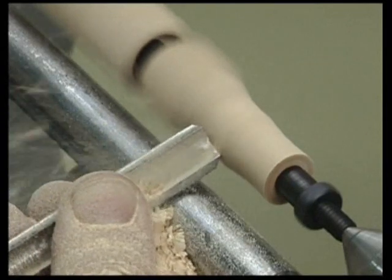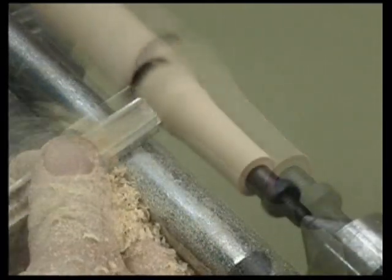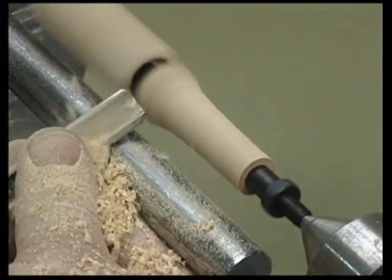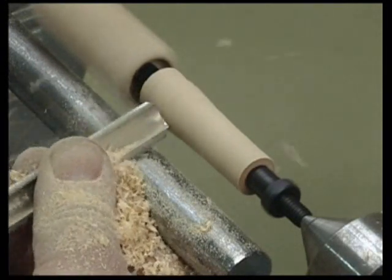We keep turning the pen until we reach the diameter of the bushings. It's the bushings that determine the final diameter of the pen. Different bushings, different diameters.